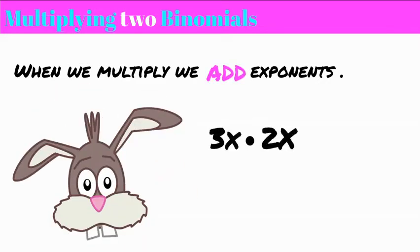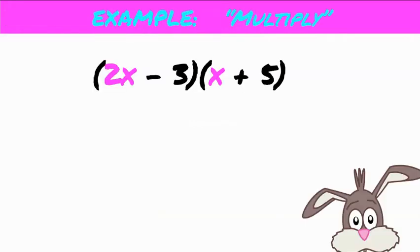So if we have 3x times 2x, remember if we don't see those exponents, there's a 1 there. We multiply those lead numbers called coefficients first, and then we add the exponents to get the exponent on the x. So we would have 6x squared. Now let's begin.